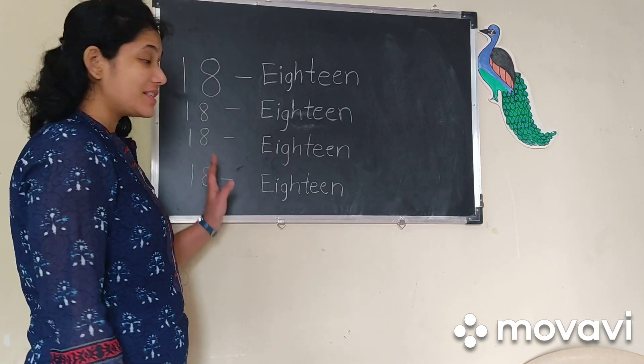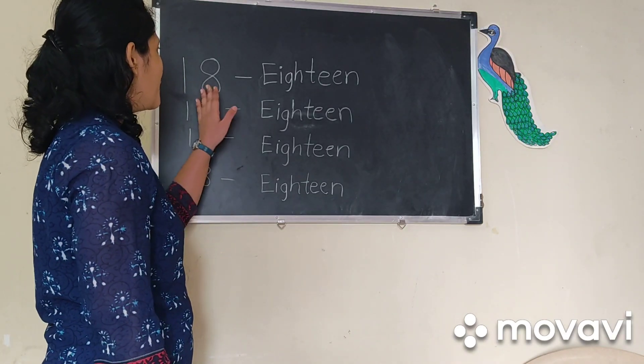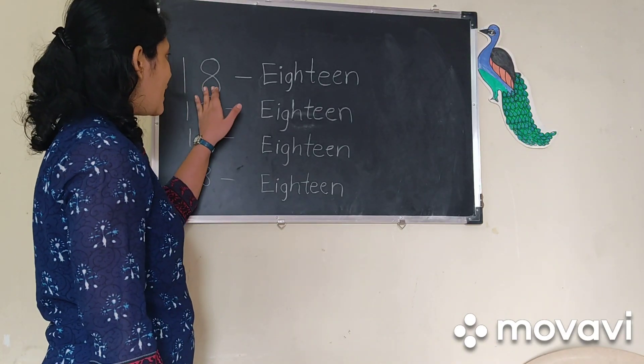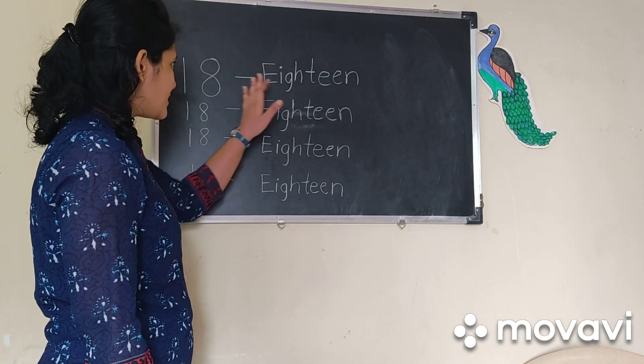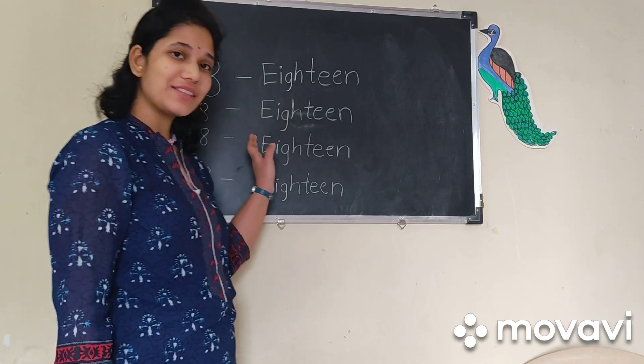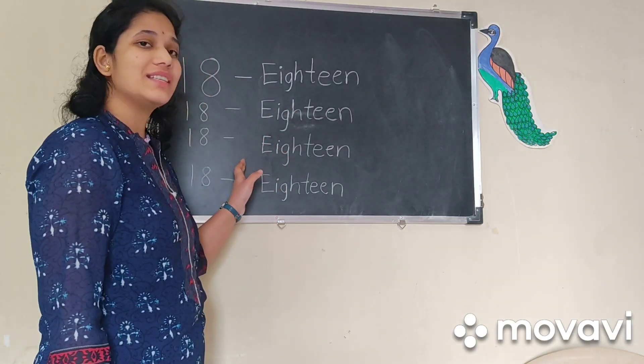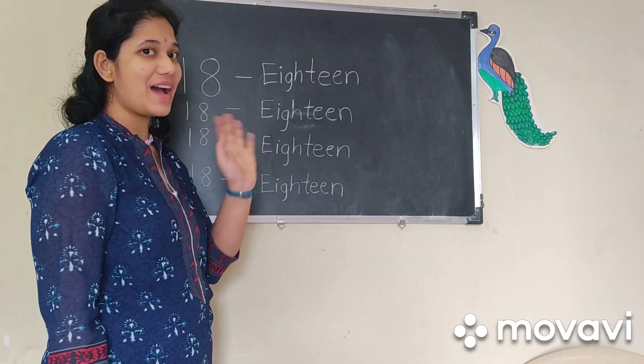18. So children, practice writing number 18 in your classroom book. Okay? Till then, bye-bye. Bye-bye.